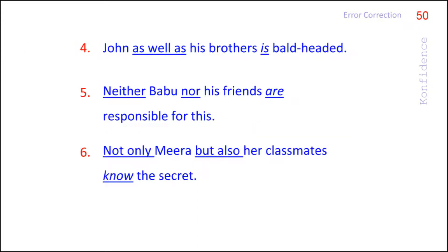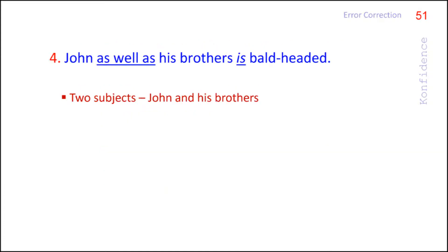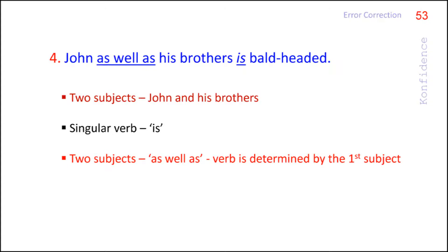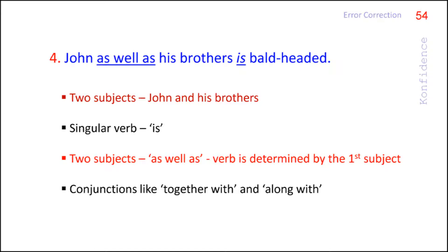Let us see some more examples. In the first sentence, the two subjects 'John' and 'his brothers' are connected with 'as well as,' and we see the singular verb 'is.' This is because when two subjects are joined with 'as well as,' the verb is determined by the first subject. Here, the first subject is 'John,' which is singular. If the sentence starts with a plural subject like 'brothers,' a plural verb 'are' must be used. This rule is also applicable for conjunctions like 'together with' and 'along with.'